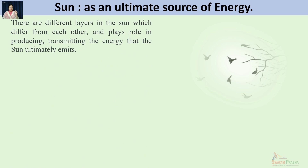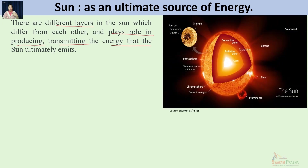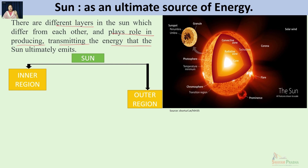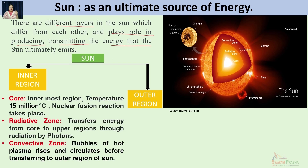The energy in the sun is primarily produced in the core, but different layers of the sun play roles in producing, transmitting, and transferring energy from the inner core to the outer region and finally emitting it to the solar system. The sun's layers are divided into two main parts: the inner region and the outer region. The inner region has three main layers. First is the core — the innermost layer, mostly in plasma state — with a temperature of 15 million degrees Celsius, where the nuclear fusion reaction continuously takes place.